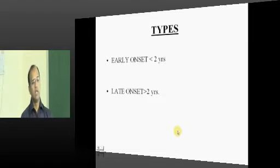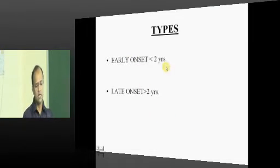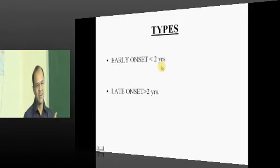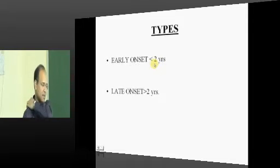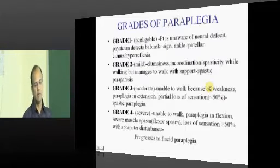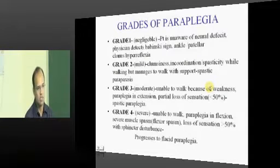There are two types of POTS paraplegia. Early onset is when it comes within two years from your detection — unfortunately described as early, but two years is not really early. Late onset is more than two years from the time of detection of tuberculosis pathology in the spine.